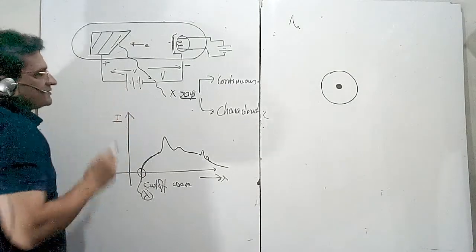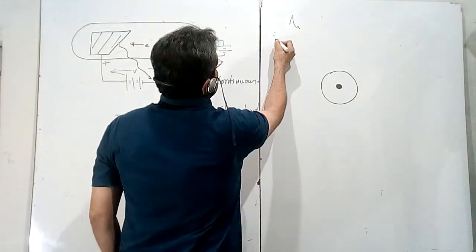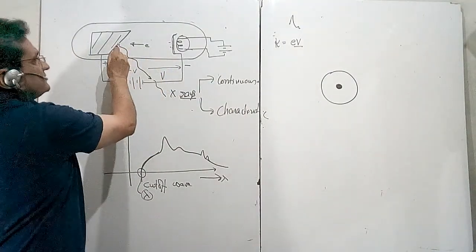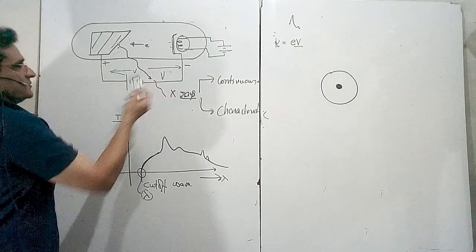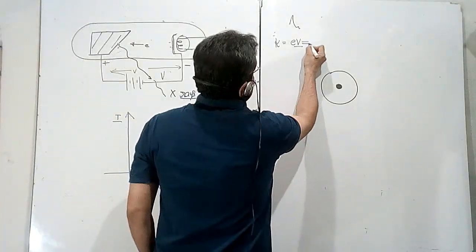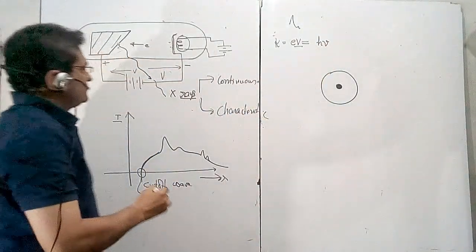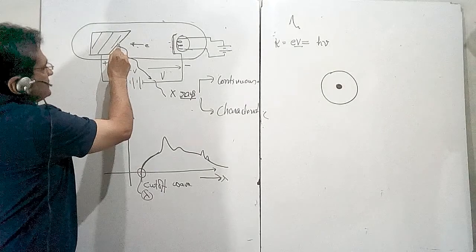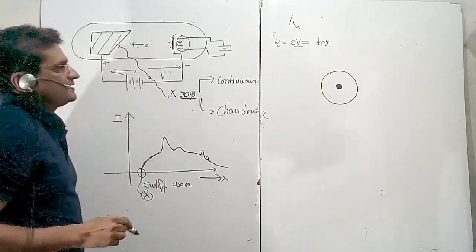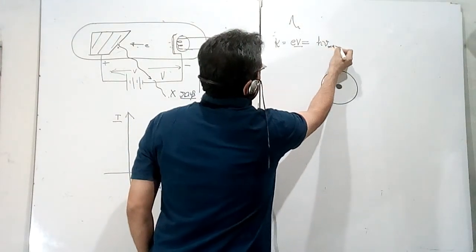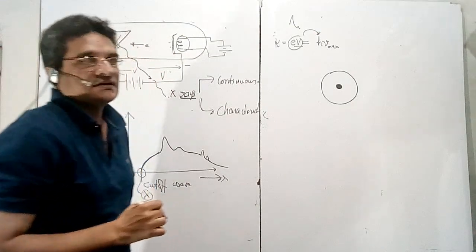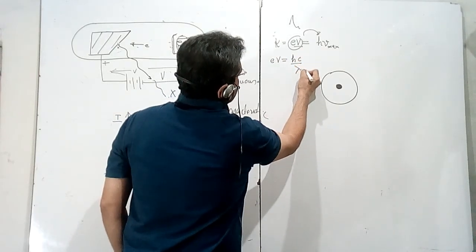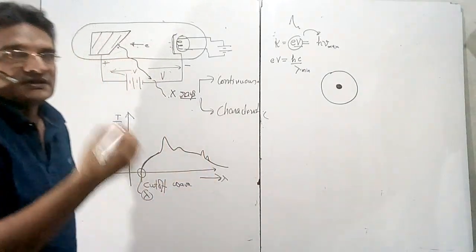This cutoff wavelength is dependent only on the potential difference V, because this is part of the continuous spectrum. The continuous spectrum is obtained because the kinetic energy of the electron, which is eV where V is the potential difference, is being reflected as the energy of the photons. X-rays are high energy photons. So when the electron is retarded, it loses energy and that energy appears in the X-rays. The maximum frequency occurs when the entire energy of the electron is converted into the photon's energy, so eV = hc/λ_minimum.